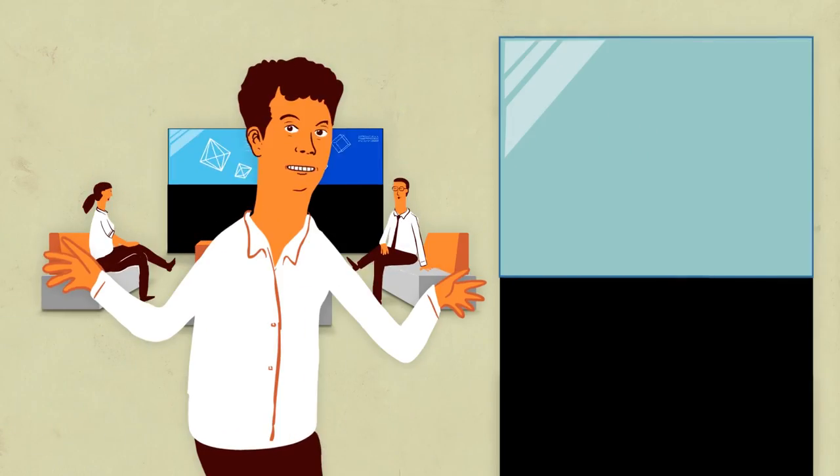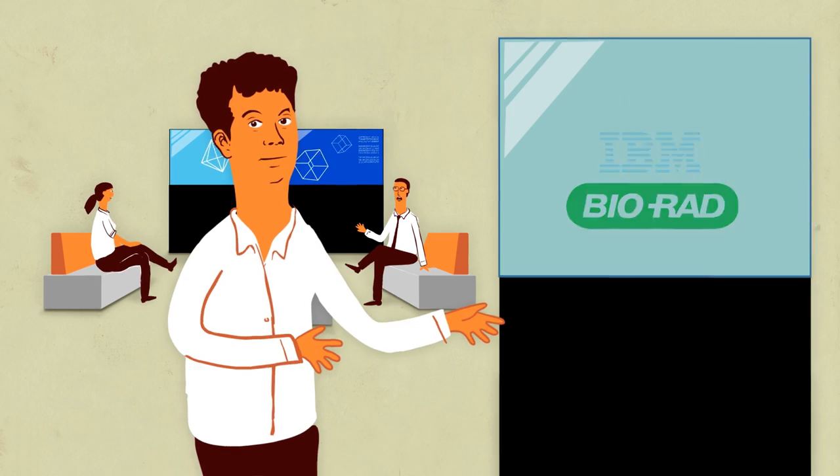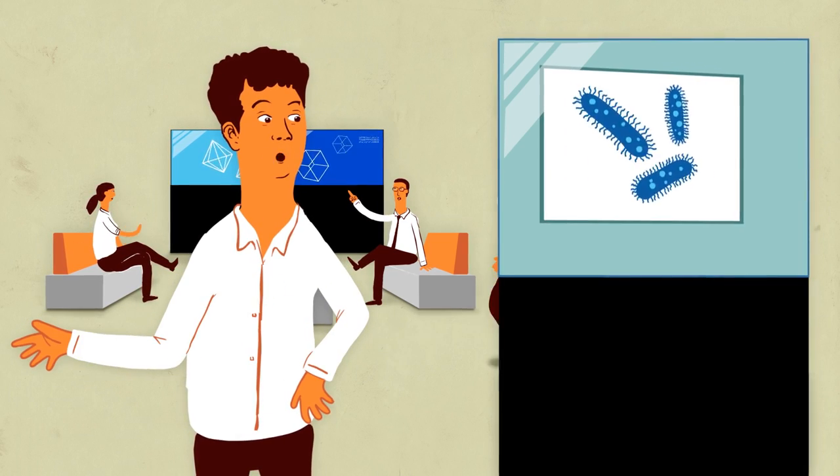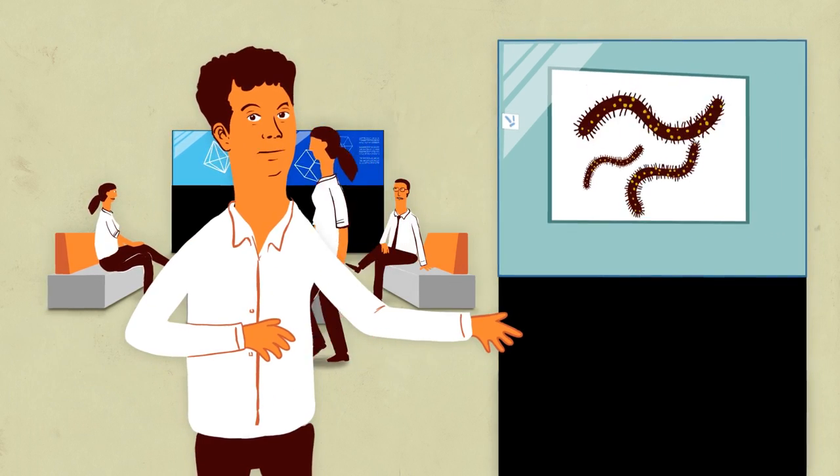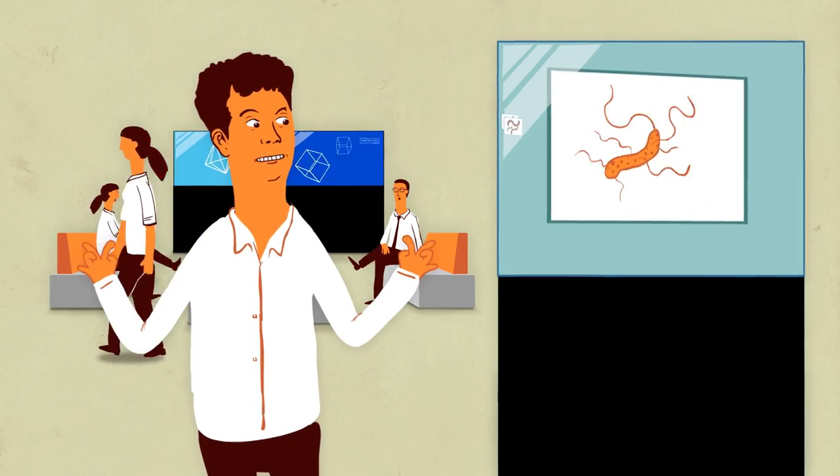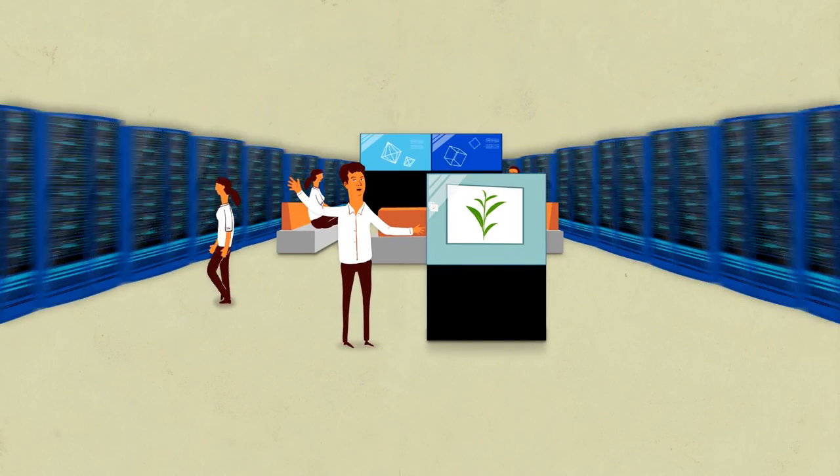That's why Mars and IBM joined forces to sequence the genomes of all the organisms in the food supply chain. That's millions of organisms. But big data is what IBM is good at.